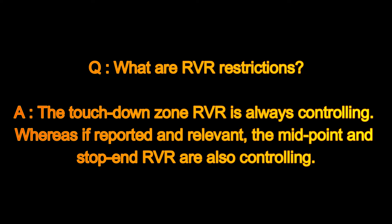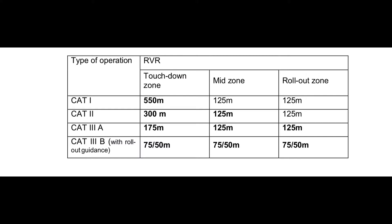What are RVR restrictions? The touchdown zone RVR is always controlling, whereas if reported and relevant, the midpoint and the stopend zone RVR are also controlling. For example, for a Category 2 ILS approach, the RVR required for the touchdown zone is 300 meters, the RVR required for the mid zone is 125 meters, and only the touchdown zone and mid zone are shaded — because for a Category 2 approach, only touchdown zone and mid zone RVRs are required.